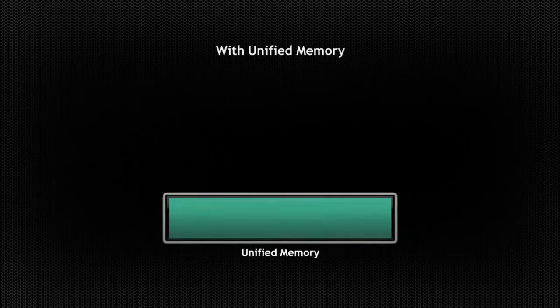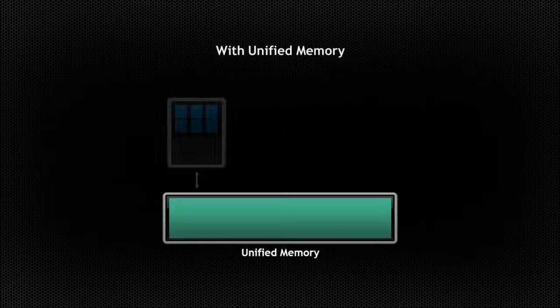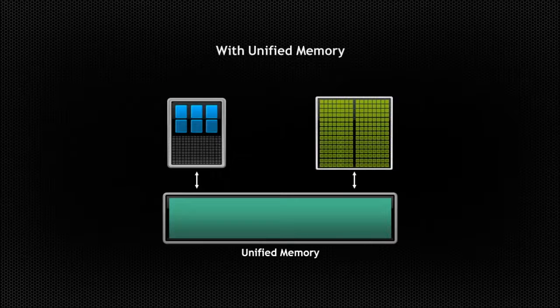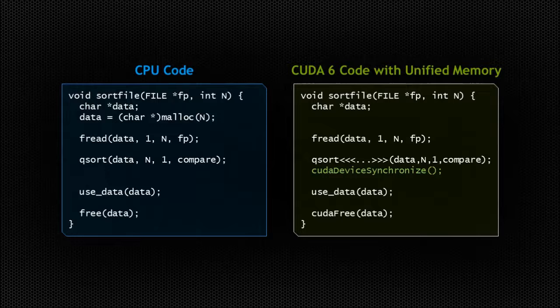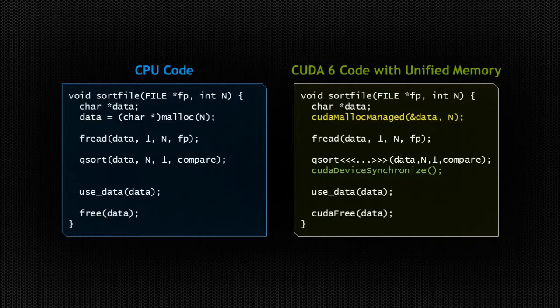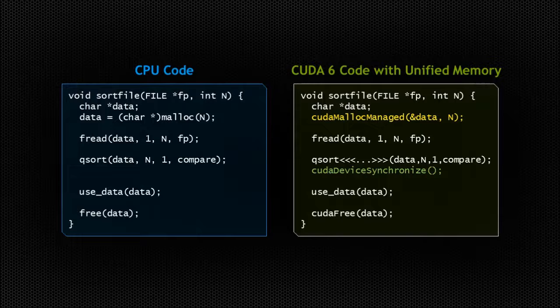Unified Memory creates a pool of managed memory that is shared between the CPU and GPU, bridging the CPU-GPU divide. Managed Memory is accessible to both the CPU and GPU using a single pointer. The key is that the system automatically migrates data allocated in Unified Memory between host and device, so that it is accessible as CPU memory to code running on the CPU, and as GPU memory to code running on the GPU.